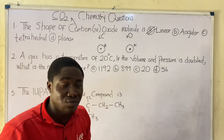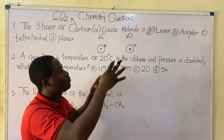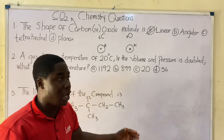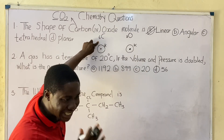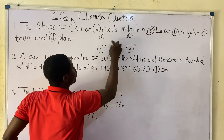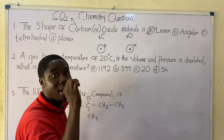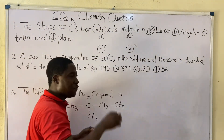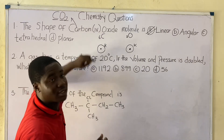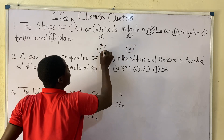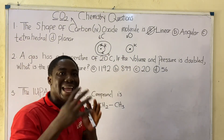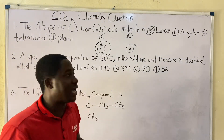You need to understand the concept of atomic structure — protons, electrons, and neutrons. Carbon has 6 electrons and oxygen has 8 electrons. The first shell, the K shell, holds a maximum of 2 electrons. Any shell after the K shell is the L shell, which holds a maximum of 8 electrons.